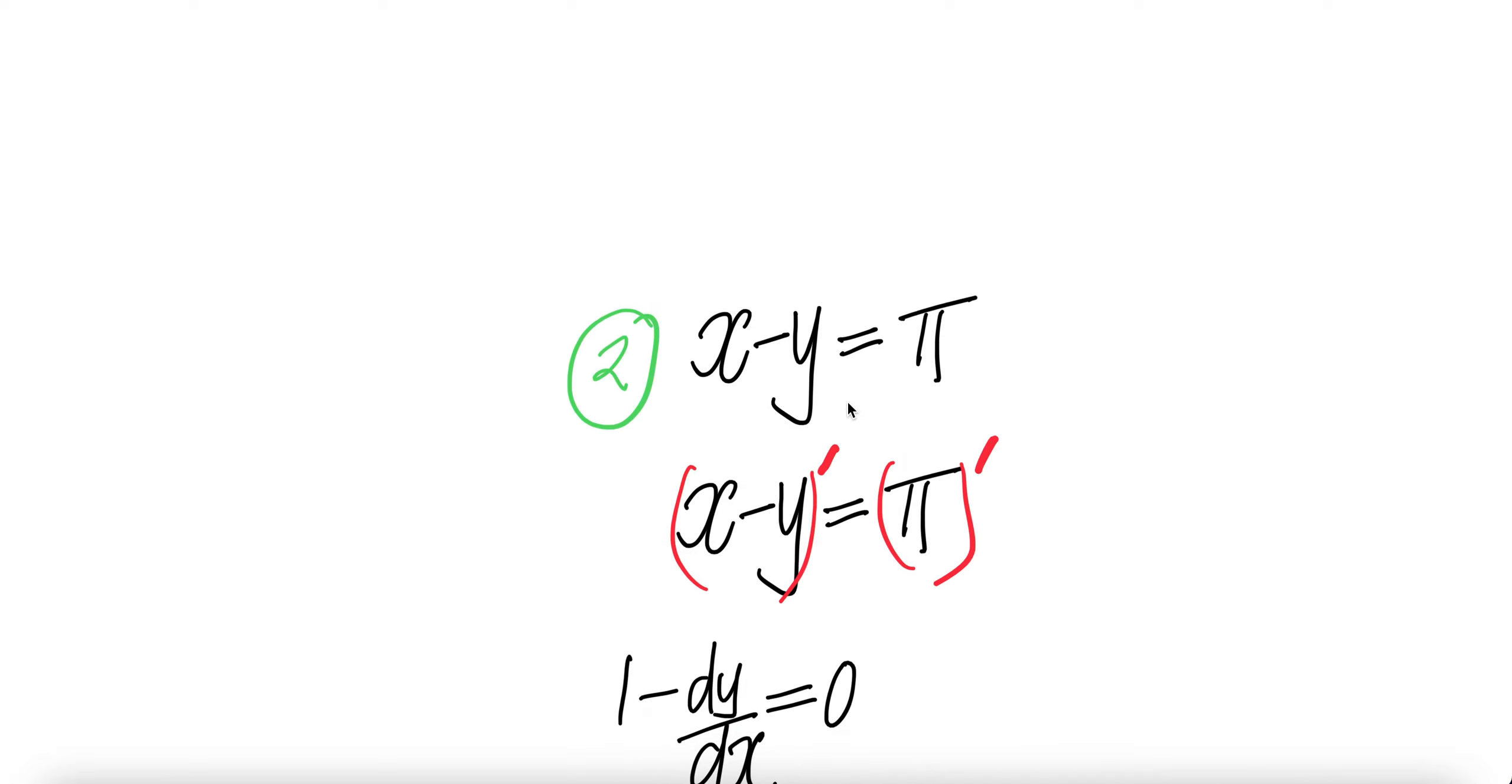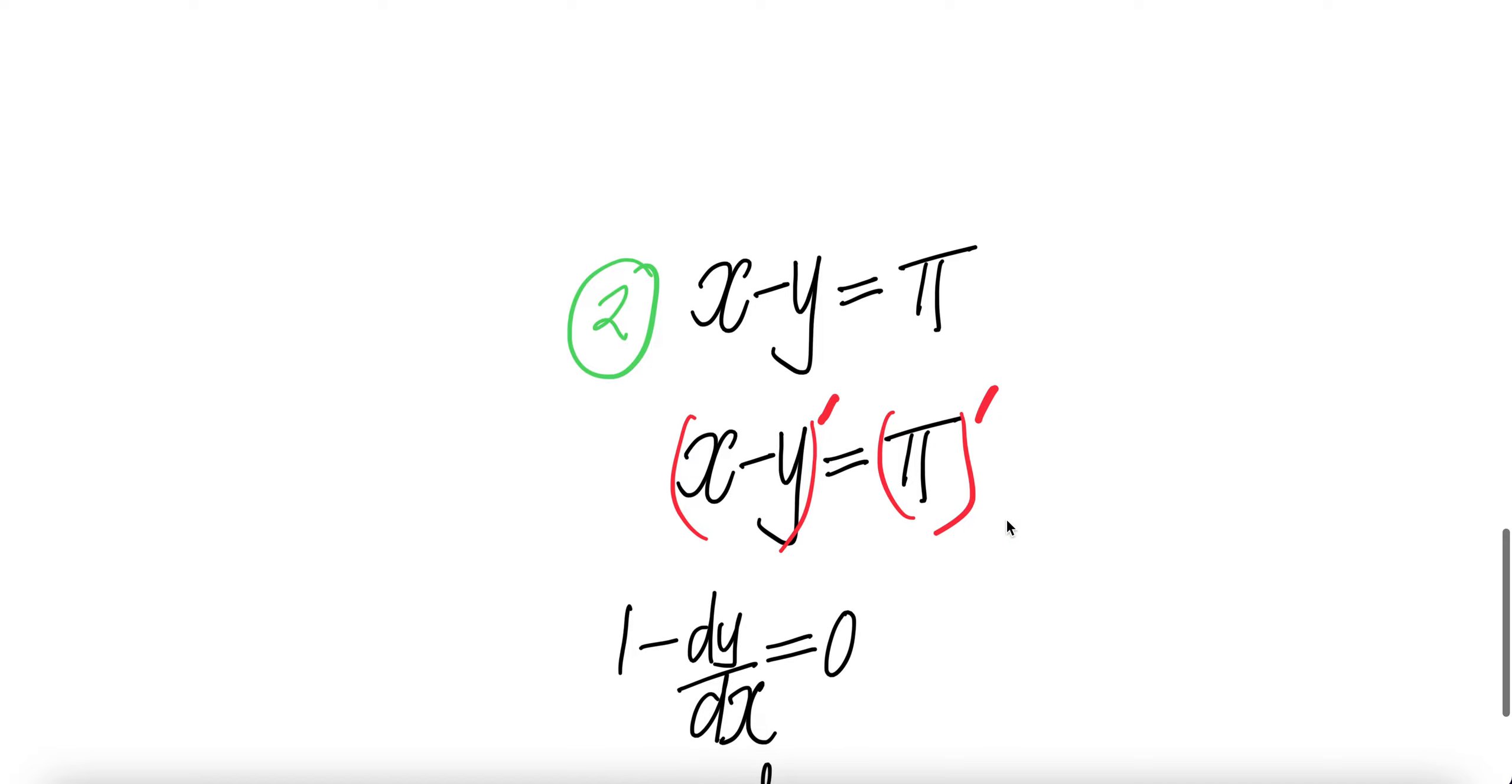Let's look at the second way. We don't isolate them. We're going to do implicit differentiation.